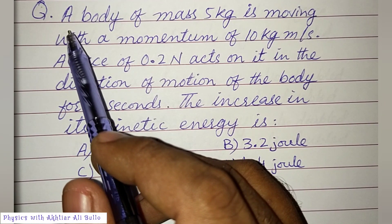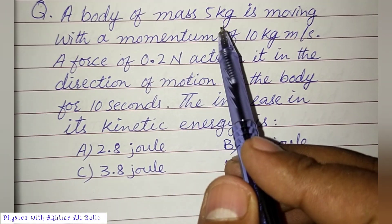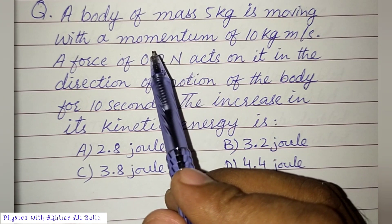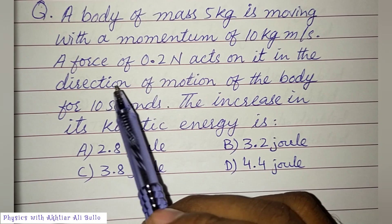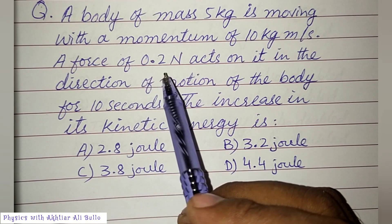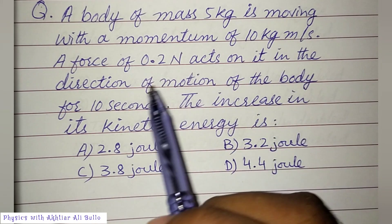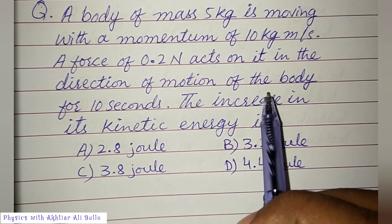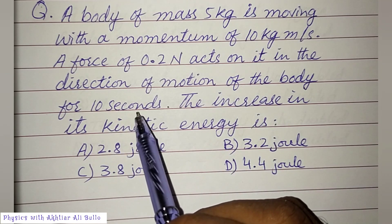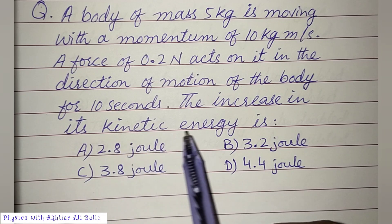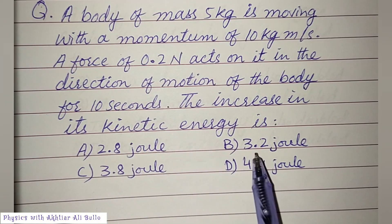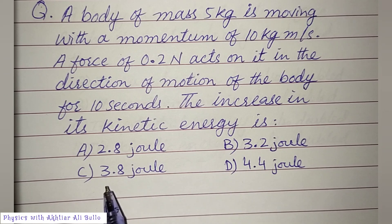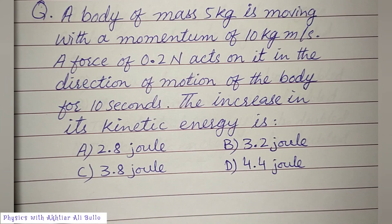The question is: a body of mass 5 kg is moving with a momentum of 10 kg·m/s. A force of 0.2 Newton acts on it in the direction of motion of the body for 10 seconds. The increase in its kinetic energy is: a) 2.8 Joule, b) 3.2 Joule, c) 3.8 Joule, d) 4.4 Joule.